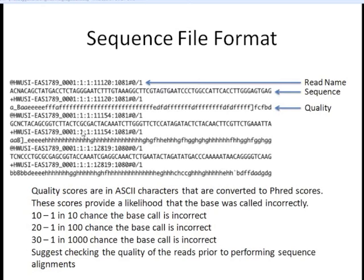These quality scores are ASCII characters that convert to a number, and that number is a relative read score. A read score provides a probability that the base was called incorrectly. If it converts to a 10, there's a 1 in 10 chance the base is called incorrectly. A score of 20 means 1 in 100, and 30 means 1 in 1,000 and so on. Before doing any aligning, I suggest checking the quality of your next-generation sequence data to see if it's of good enough quality to trust your alignments.